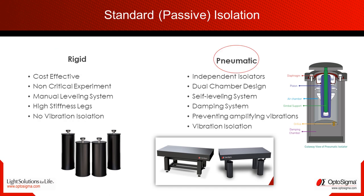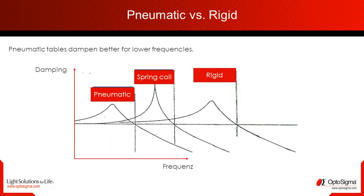We call a table with air suspension a pneumatic table. Both are passive vibration isolation systems. Let's take a closer look at the different isolation properties of these tables.